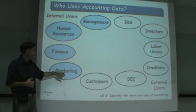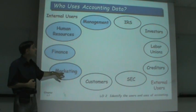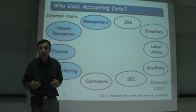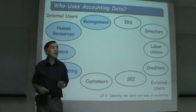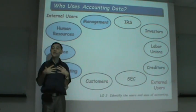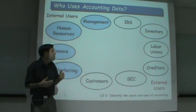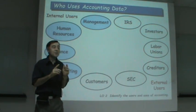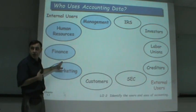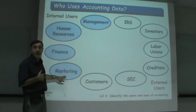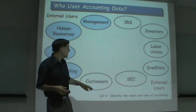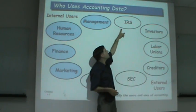The next type of internal user is marketing. Marketing wants to know what is going on: is this product selling, is this product making a profit, is the business making a profit? All major internal users — management, finance, marketing — need to use accounting to understand what is happening in the business.